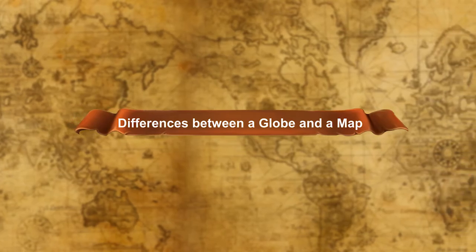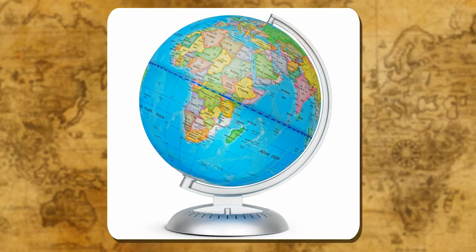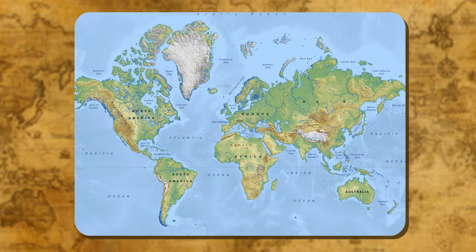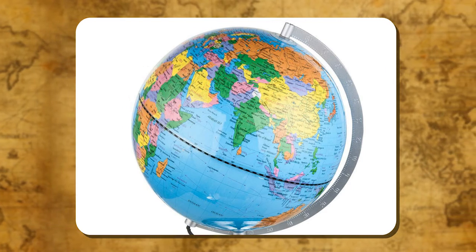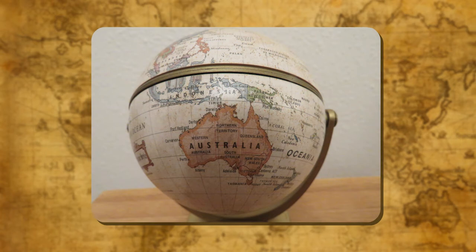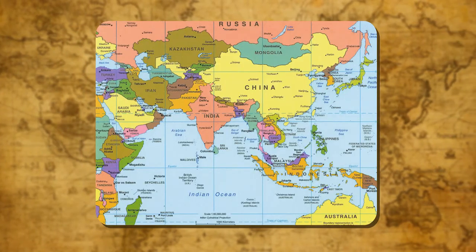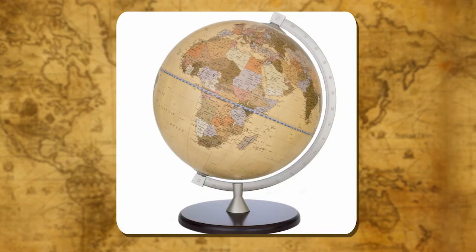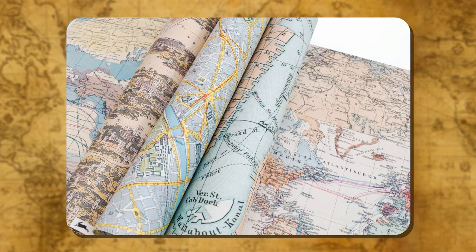Differences between a globe and a map. A globe is a three-dimensional model of the earth; a map is a two-dimensional representation of the earth. Globes show very few details; maps can show a large amount of detail. Globes show the shapes and sizes of countries accurately; the shapes and sizes of countries get distorted in a map. It is inconvenient to carry a globe; it is easy to carry a map.